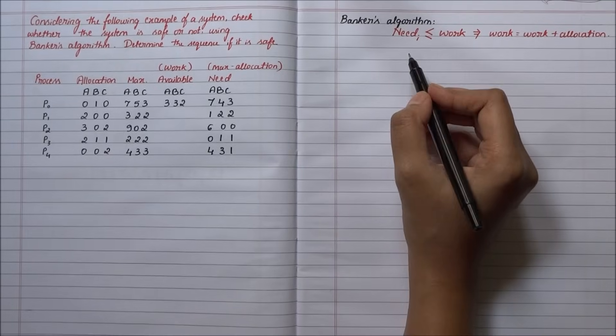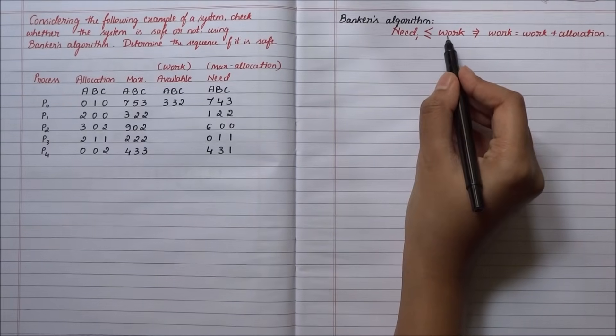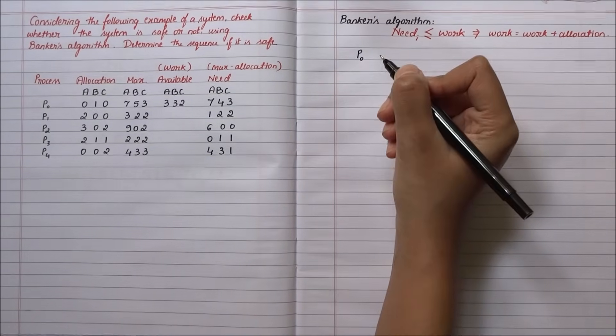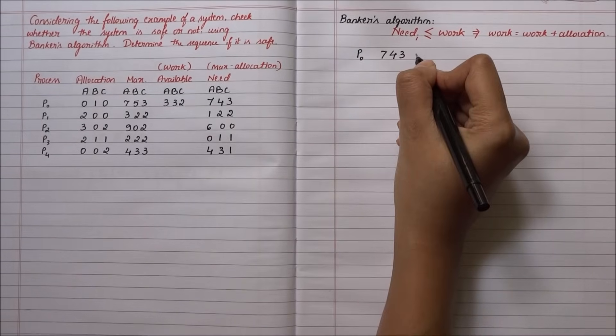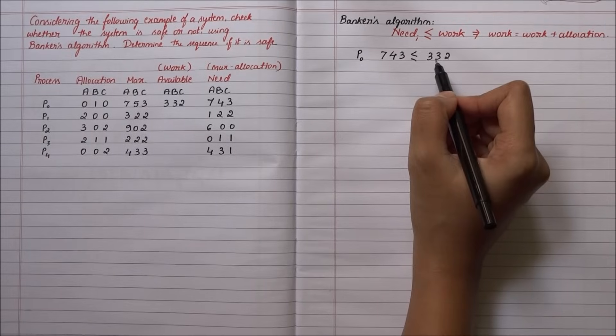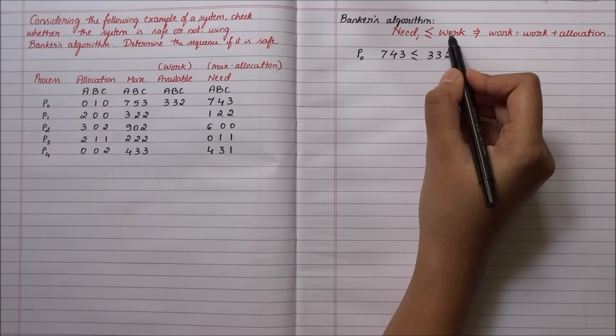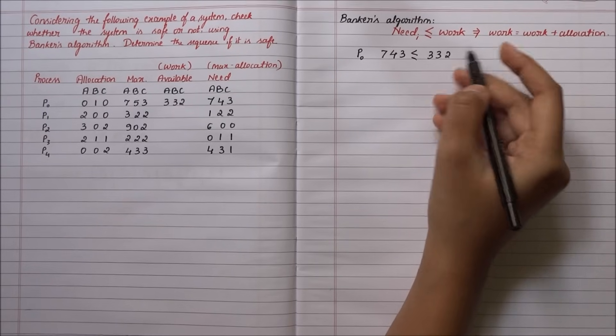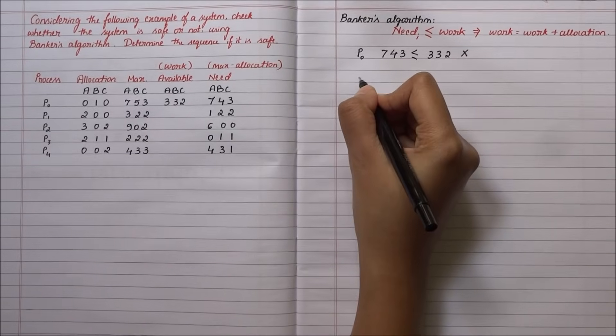According to the algorithm, we need to compare the need of each process with the work. First, let me take up P0. The need of P0 is 7-4-3. We check if it's less than or equal to the work, which is 3-3-2. It's clearly not, so the condition fails and we check the next process.